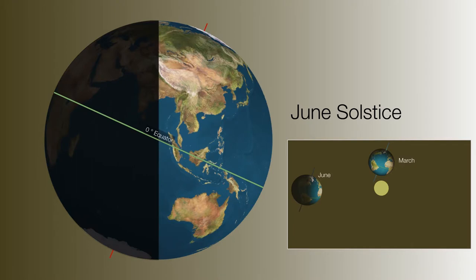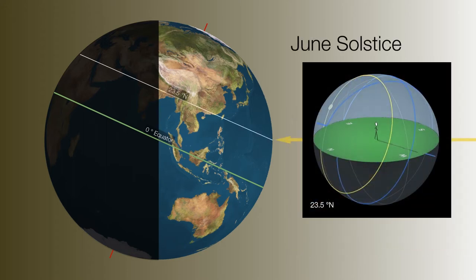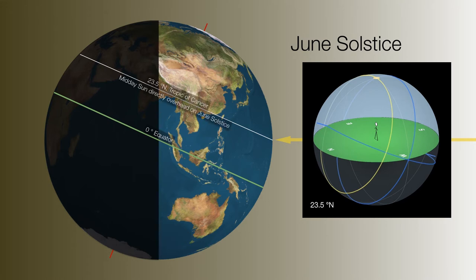This tilt of the Earth produces some very interesting alignments during the solstices and equinoxes. During the June solstice, a single column of sunlight strikes at a latitude of 23.5 degrees north, making the midday summer sun arrive at the zenith. If you happen to be at this latitude, you get the midday sun directly overhead, and it's for this reason we call it the Tropic of Cancer — the midday sun is always overhead on the June solstice.